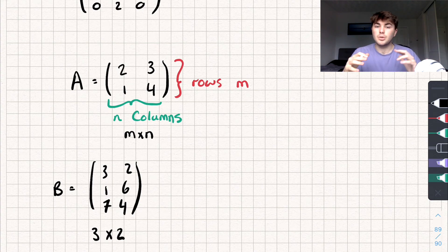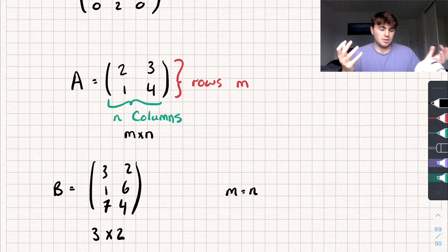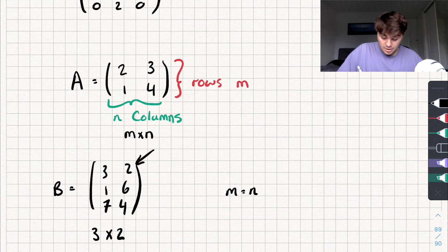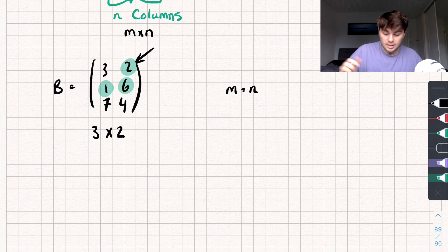Now there are some other special matrices we can talk about. So if the number of rows is equal to the number of columns, so M equals N, we have what's called a square matrix because it makes a square. Another special type of matrix is where every entry or every element in the matrix. So these numbers that are written in the matrix, so two, six, whatever it is, they're called the elements of the matrix.